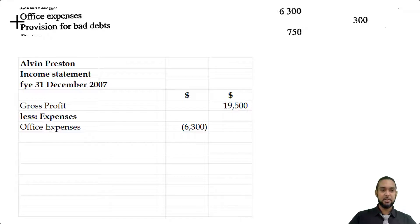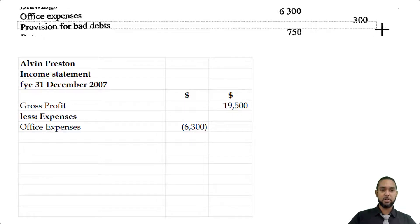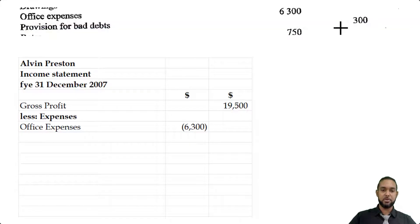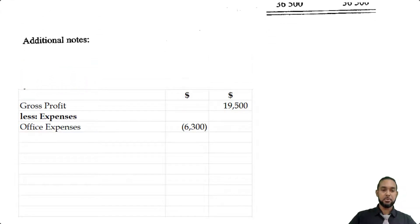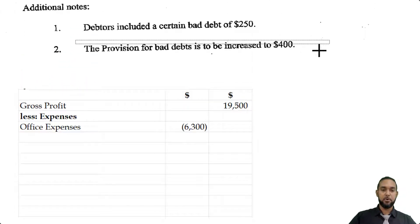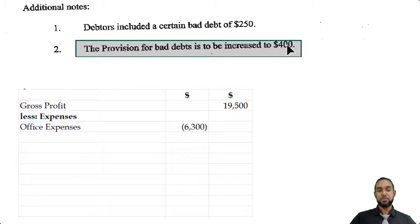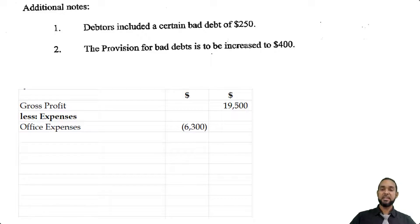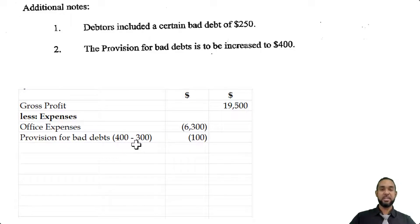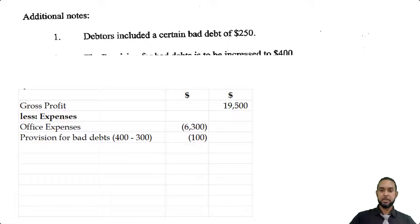The next item is the provision for bad debts. Remember, it's not the $300 amount that's going to go in, and it's also not the $400 amount — it's the change. The existing provision as per the trial balance is $300; we want to increase it to $400, which requires an increase of $100. I also like to put a little working in brackets sometimes to show how I got the figure.